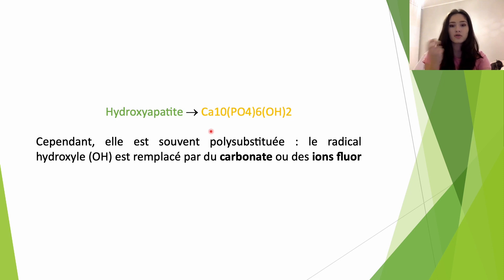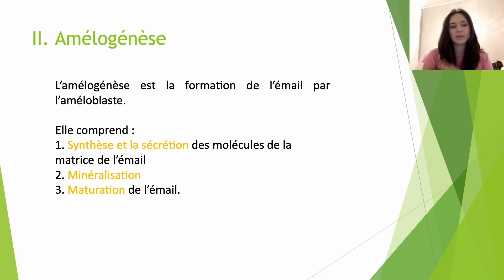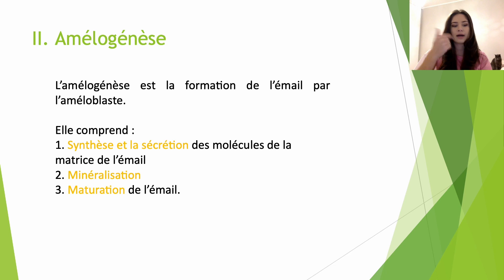Maintenant on va attaquer le vif du sujet : l'amélogénèse, la formation de l'émail par l'améloblaste. L'émail est d'origine ectodermique, car les améloblastes sont issus de la différenciation des cellules de l'épithélium dentaire interne de l'organe de l'émail. L'émail se forme uniquement au stade de la couronne. Lorsque la formation de l'émail d'une dent est terminée, débute alors le stade de la racine.